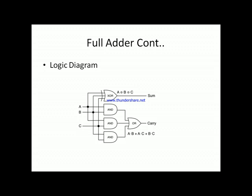Now we draw the logic diagram for the full adder. For sum we use an XOR gate to which the three input variables A, B, C are applied. For carry, three AND gates are used: the first AND gate takes inputs A and B, the second takes A and C, the third takes B and C. The outputs of the three AND gates feed into an OR gate, and the OR gate output is the carry. This completes the full adder.